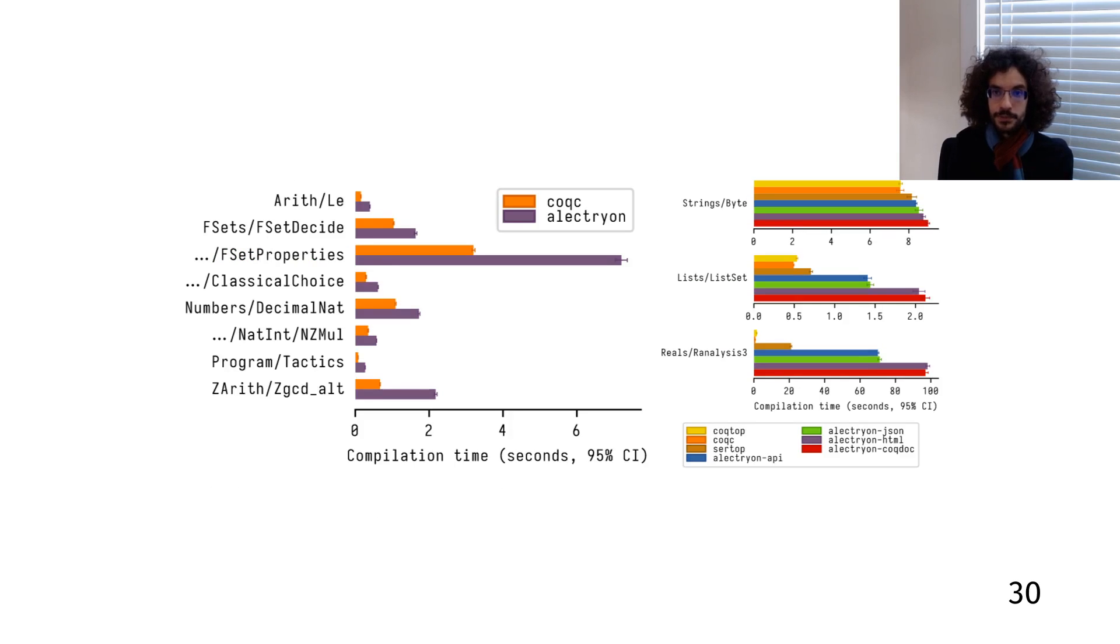The second axis measures Alectryon's speed. All the graphs are in the paper, but the long story short is that Alectryon has a median overhead of about 3x on compilation times. 90% of the files fall below 7x, and a good one-third of that is communication overhead that probably could be eliminated in the future. The rest is the overhead of collecting and formatting goals, which can be pretty costly for files that have many goals.